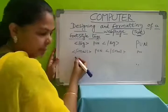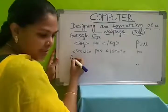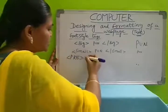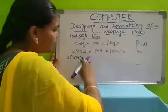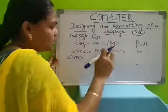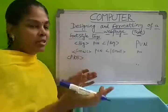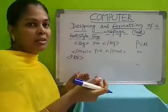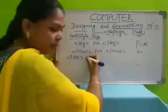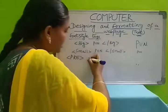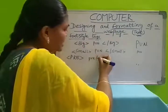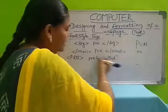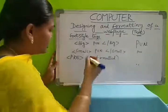Next one is PRE (pre-formatted). This means however much space you give, however you type the sentence in the program — as it is, it will be displayed on the webpage. It considers how much space you give, and displays it as-is on the webpage. For this also there is a closing tag.